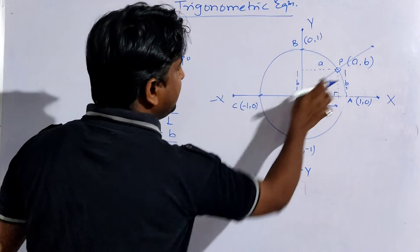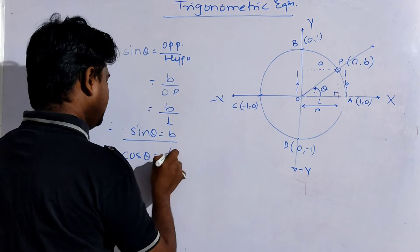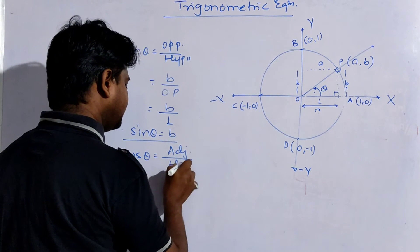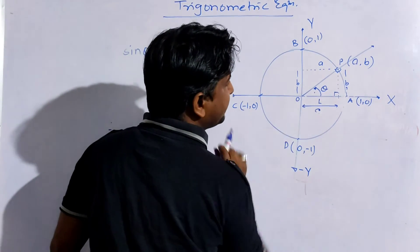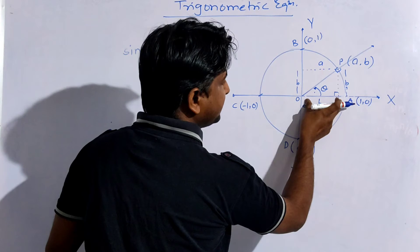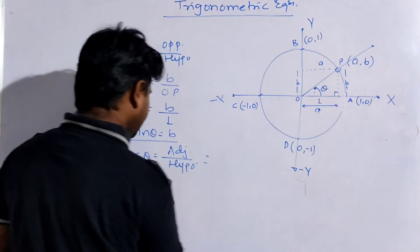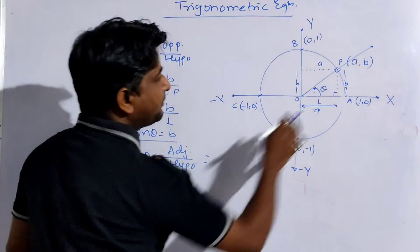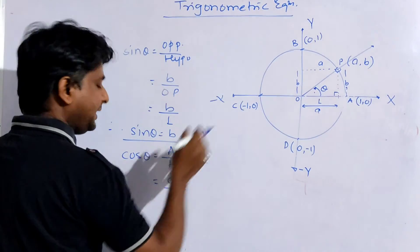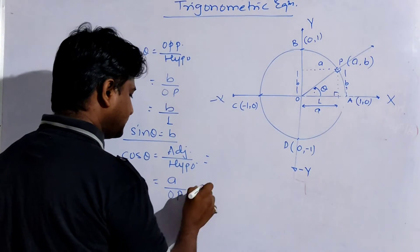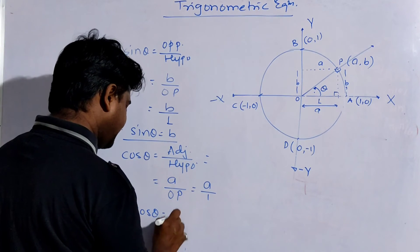Now similarly we will find out the value of cos theta also. Cos theta is equal to adjacent side upon hypotenuse. Now from this figure, what are we getting? The adjacent side is this one, and how much is the adjacent side? It is equal to a. For this triangle, this is a. And the hypotenuse is obviously OP. So this is a upon 1, which means that cos theta is equal to a.